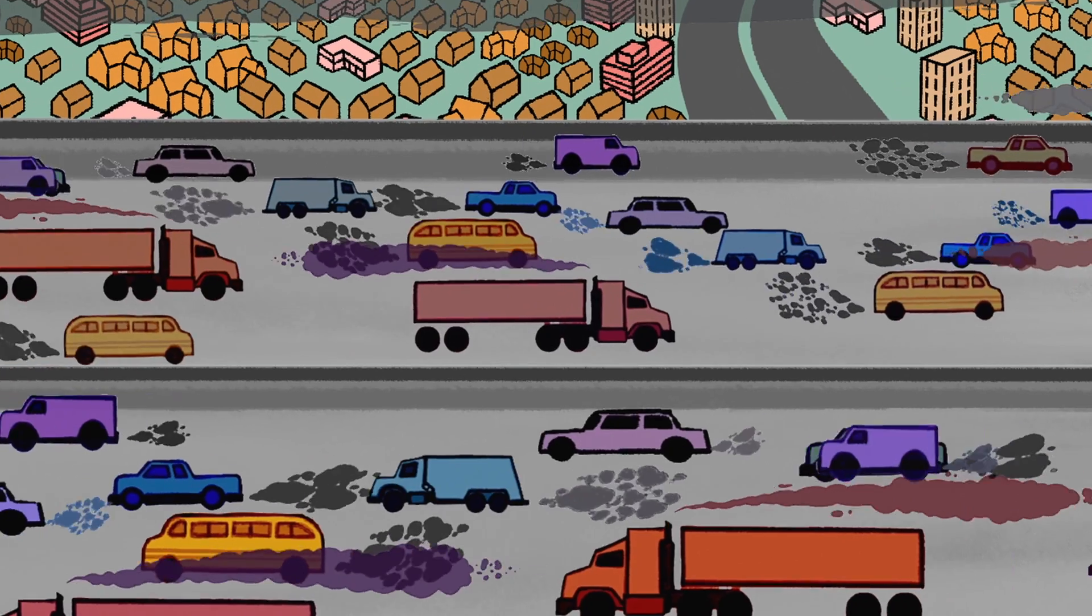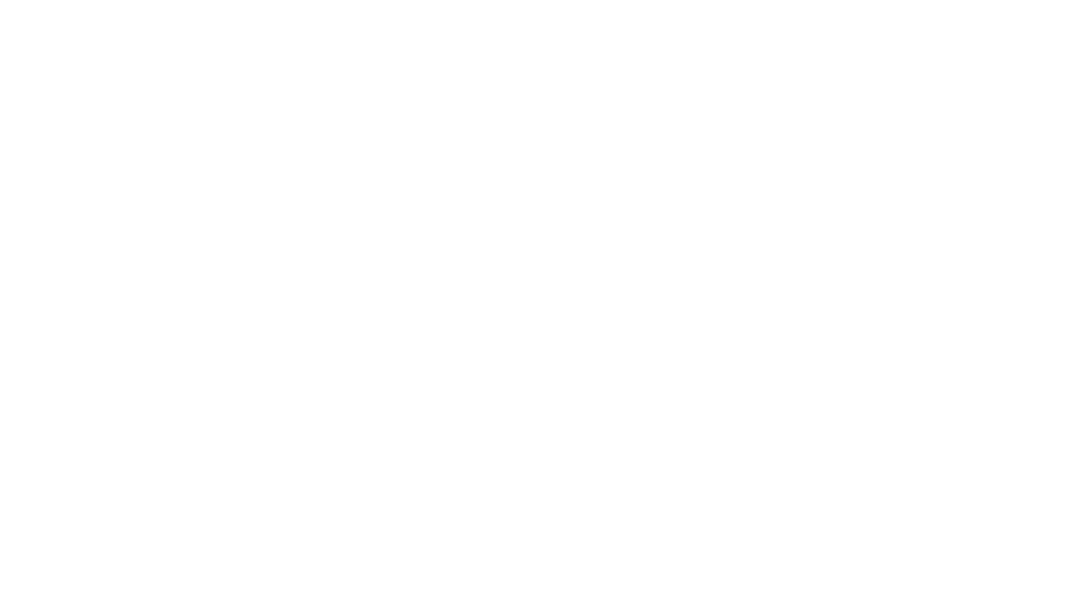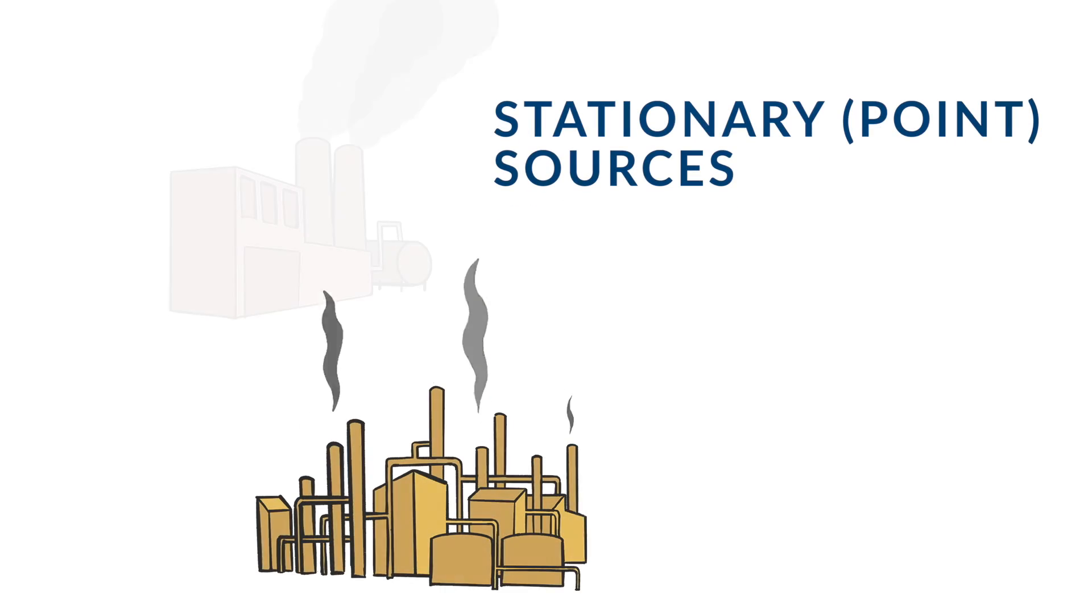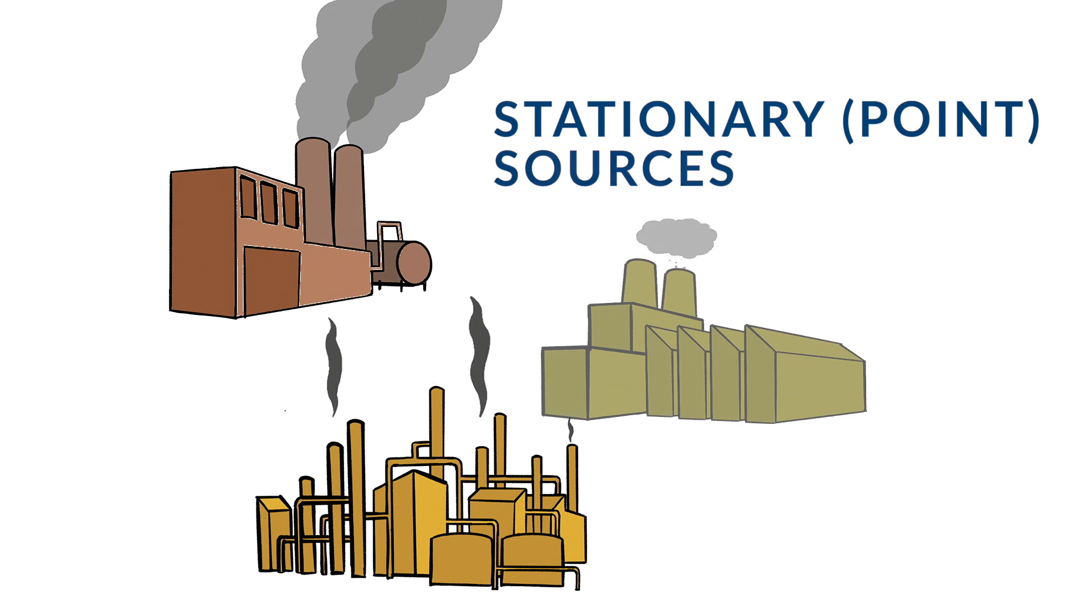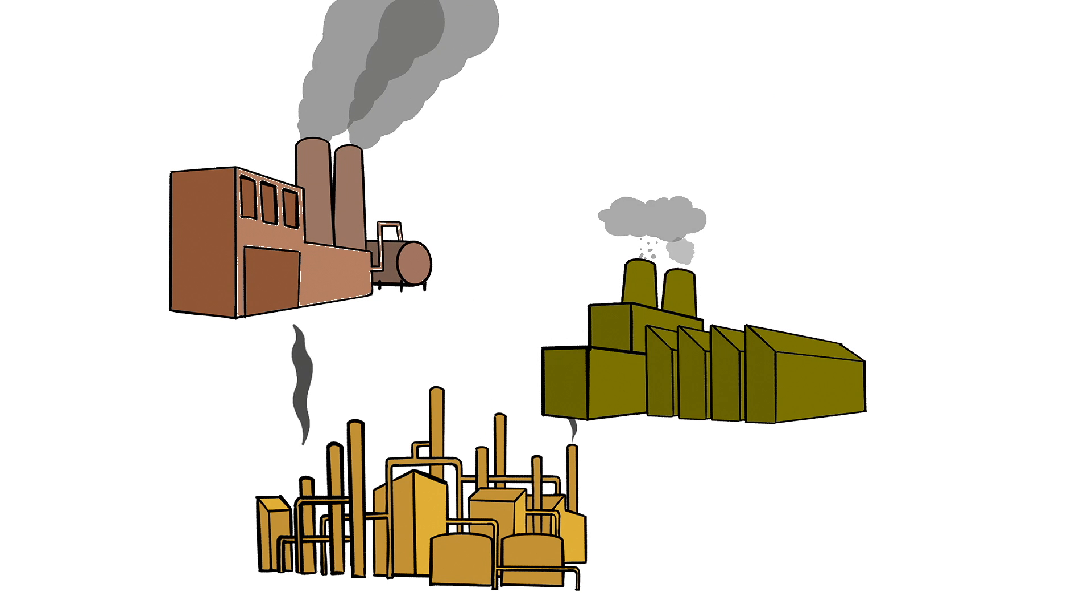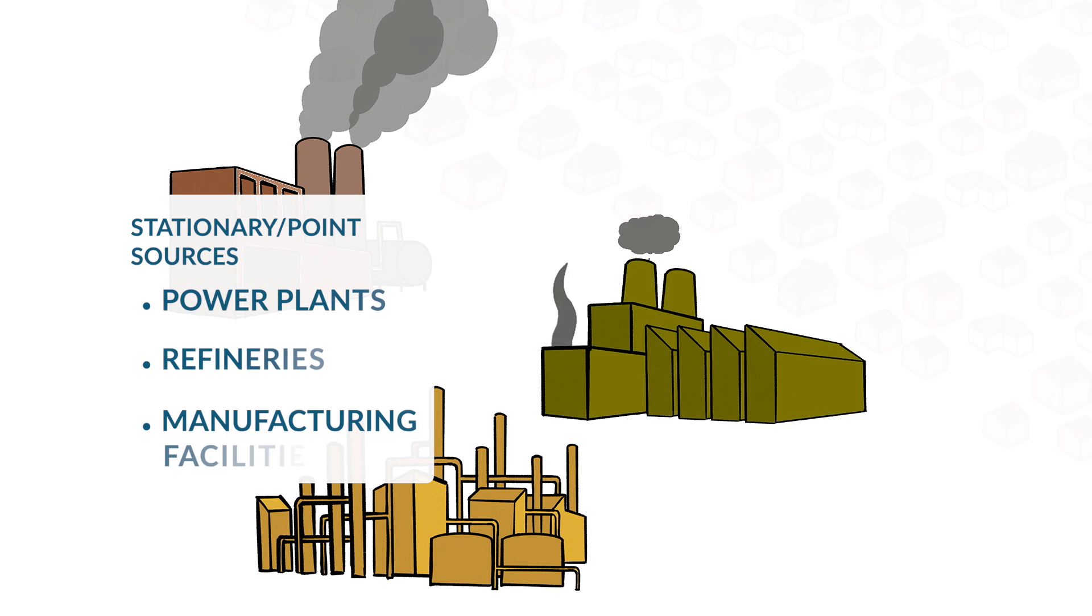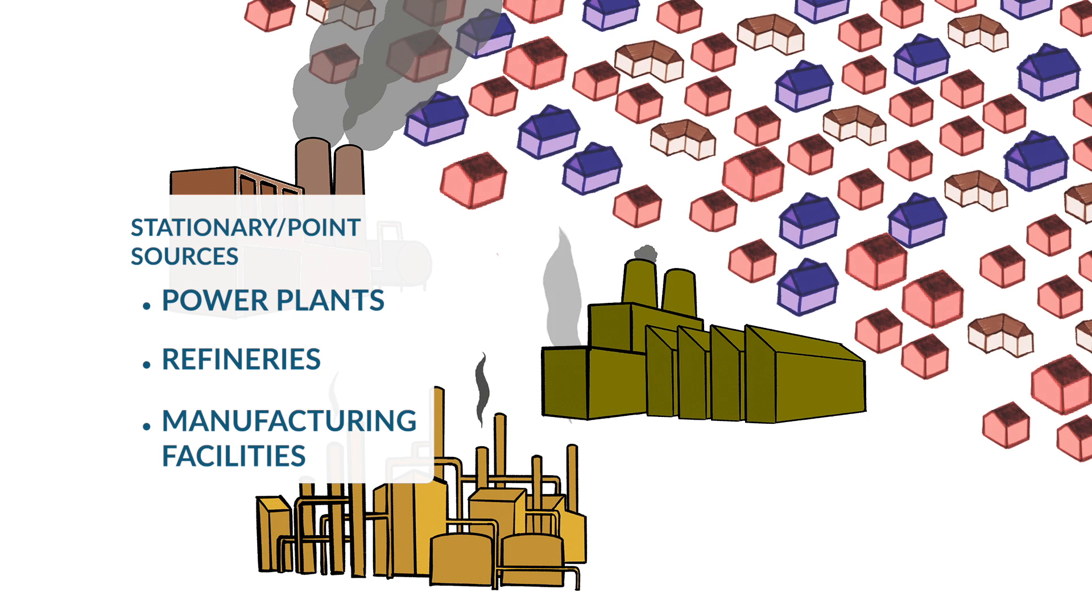Let's look at the differences between these categories. Stationary sources, sometimes referred to as point sources, are non-moving producers of air pollution and greenhouse gas emissions. Some examples of stationary sources include power plants, refineries, and manufacturing facilities.